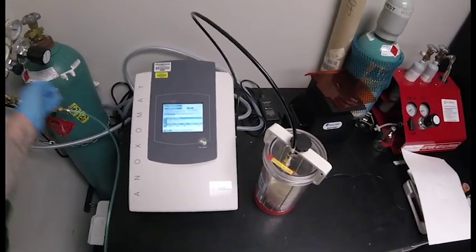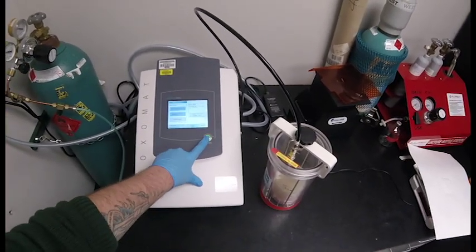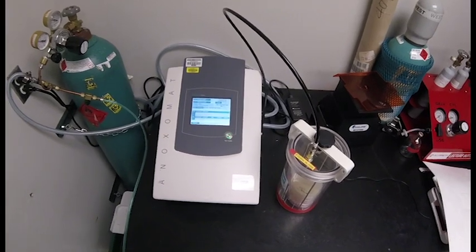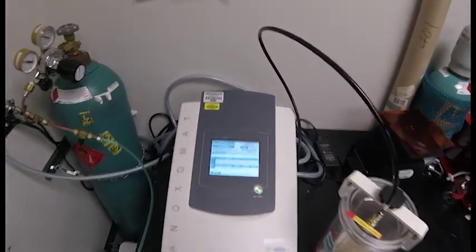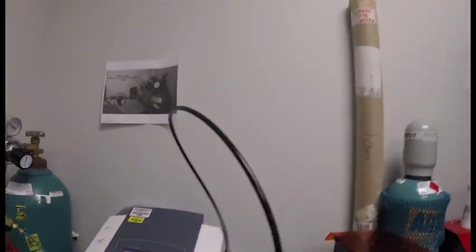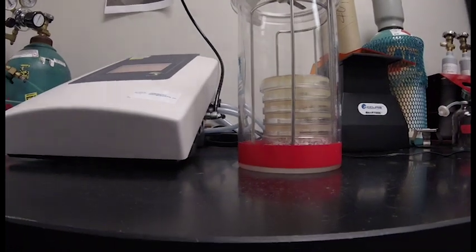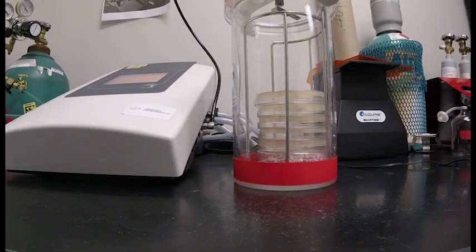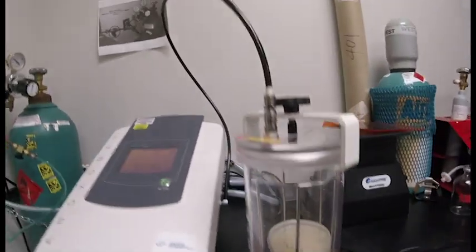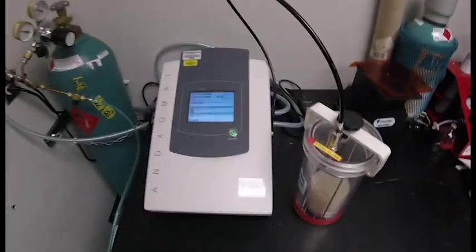Supplying gas to methanotrophs growing on agar plates requires hardware which will add gas into a sealed jar. Alternatively, the plates can contain methanol which will also support the growth of methanotrophs. Plates should be incubated upside down with the agar side up.